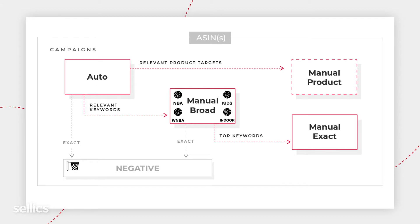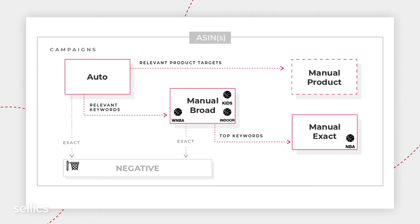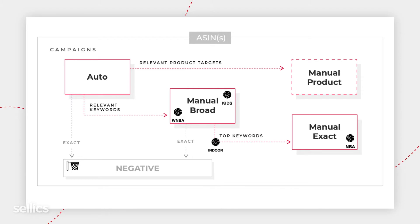Two of these search terms will collect clicks and orders right off the bat. Basketball NBA is very relevant to what we're selling, therefore it's going to get clicks and sales and be promoted to your Manual Exact campaign. Your Manual Exact campaign is only going to contain your top performing search terms. Basketball Indoors is also going to convert — it may be a little slower because the search term has less traffic — but as soon as it does convert, Selix will recognize it and promote it to Manual Exact as well.